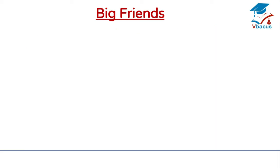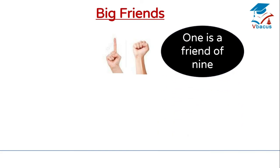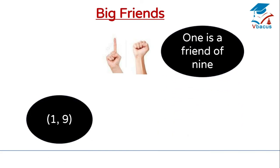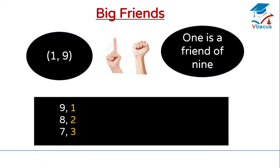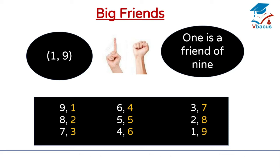In the next figure, how many fingers are closed? 9. How many fingers are open? 1. So 1 is a friend of 9. We write it as 1, 9. Now let us revise. 9 is a friend of 1. 8 is a friend of 2. 7 is a friend of 3. 6 is a friend of 4. 5 is a friend of 5. 4 is a friend of 6. 3 is a friend of 7. 2 is a friend of 8. 1 is a friend of 9.